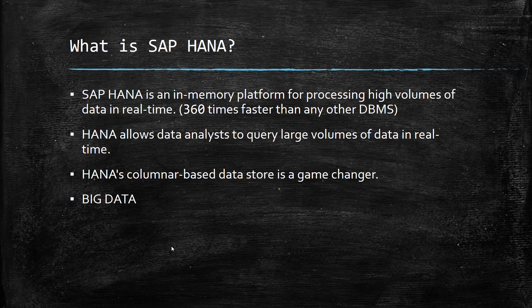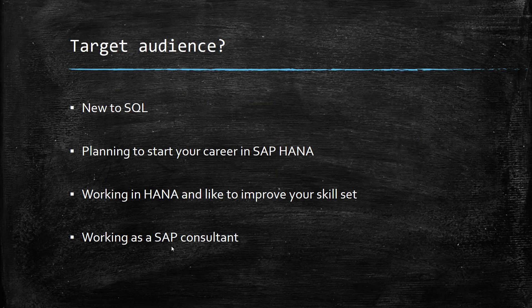On the other hand, HANA supports both row and column store tables. Column store tables are best fit for any analytical applications like data warehouse. So with all these features, HANA is considered in the big data family.